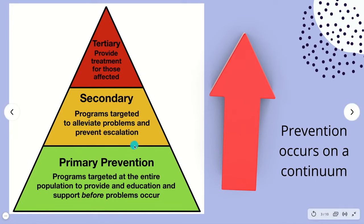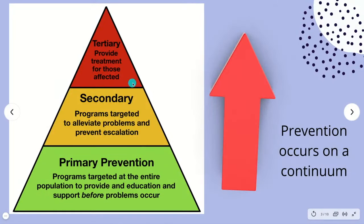In secondary prevention, people might have some symptomology or risk factors already. We're trying to alleviate and minimize those problems and stop them from escalating — trying to contain here. Then at tertiary, we're providing individualized treatment and focusing on quality of life. Remember, prevention occurs on a continuum.